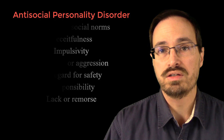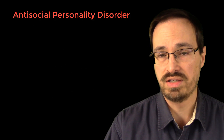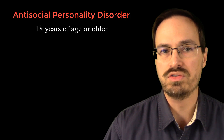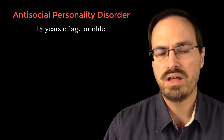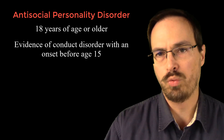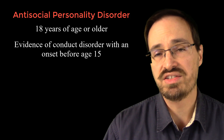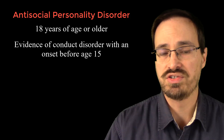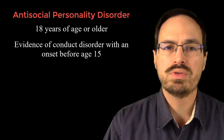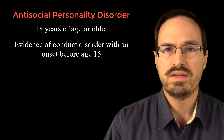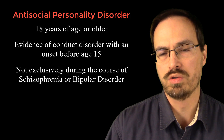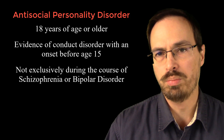Criterion B indicates that in order to be diagnosed with antisocial personality disorder, the individual must be at least 18 years of age. With Criterion C, conduct disorder symptoms must have been present before the age of 15 — so just as with all personality disorders, there is no such thing as late-onset antisocial personality disorder. Criterion D specifies that the antisocial behavior cannot occur exclusively during the course of schizophrenia or bipolar disorder.